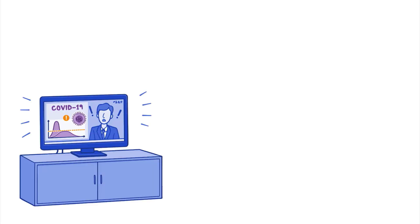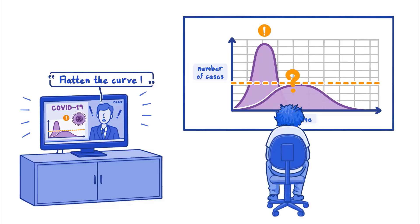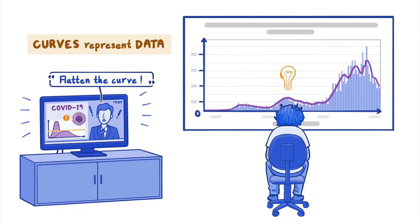During the COVID-19 pandemic, you might remember seeing news reports showing graphs like this, or hearing the phrase 'flatten the curve.' You might have wondered what these graphs are showing and why we care about these curves. These curves represent a lot of data, which would be much harder to understand if presented in a list or table. It is more difficult to see patterns when staring at columns of numbers. Graphs illustrate data in ways that are easier for people to understand.